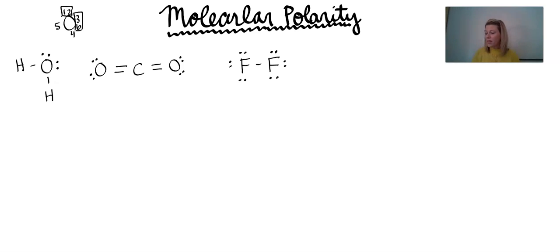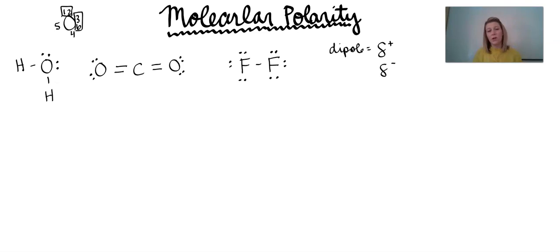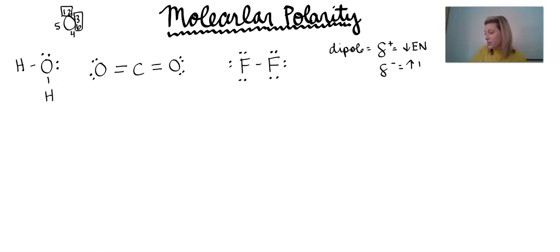In terms of dipoles, that term represents the idea of partial positive and partial negative charges formed when there is an unequal sharing of electrons between two atoms. Our partial positive charge is always assigned to the lower electronegativity, and our partial negative is always assigned to the greater electronegativity. The reason being that if you have a stronger attraction to the electrons, you're holding on to those electrons a little bit tighter, which results in that partial negative charge because electrons are negative.